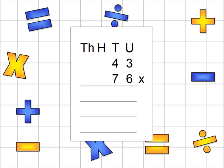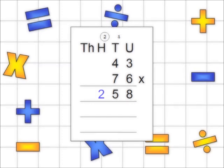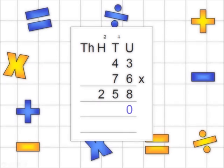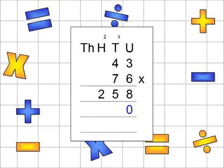Look at the units column — multiply 3 by 6. The answer is 18. The 8 goes in the units column, and the 10 goes above the T in the tens column. Next, look at the 4 in the tens column and the 6 in the units column. Multiplied together, these come to 24. The 4 goes in the tens column, and the 2 of the 20 goes into the hundreds column, above the H. But you also need to add the 1 above the T in the tens column to the 4 in the tens column, making 5. Because the 2 in the hundreds column is the only number there, the answer is 2 — or 200, as it's in the hundreds column. Next, because you are working with multiples of 10, there will be no units in this section, so you will need to put a 0 in the units column. This will always be the case with these types of questions.